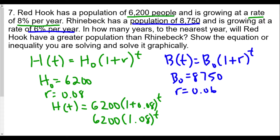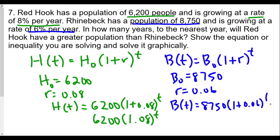For Rhinebeck we use b(t). The initial population b(0) = 8,750, and the rate of increase is 6% per year, so r = 0.06. That gives b(t) = 8,750 × (1 + 0.06)^t.